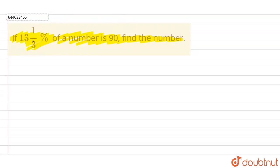Here it's written 13 whole 1/3, that is 40/3. So 40/3 percent of a number. Let the number be x, so 40/3 percent of x equals 90.